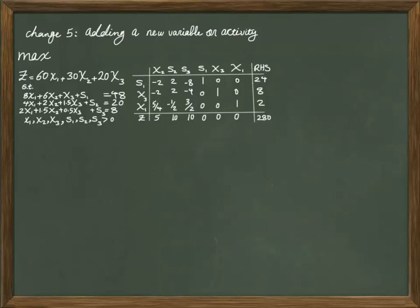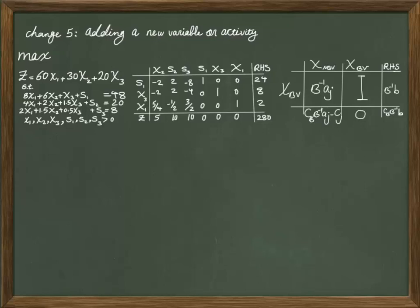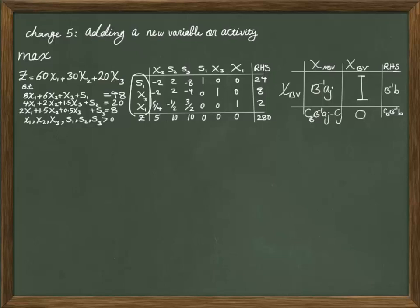In this scenario, your production plan says that you have to produce x1 by 2 units and x3 by 8 units. If you recall the system of equations that we have, it allows us to calculate the final optimal table given the basic variables in the optimal solution. Since we already have the basic variables in the optimal solution — S1, X3, and X1 — we can calculate the optimal table given these three basic variables. Because we are not currently producing the new activity or new product, it will be considered as a non-basic variable in the final optimal table.